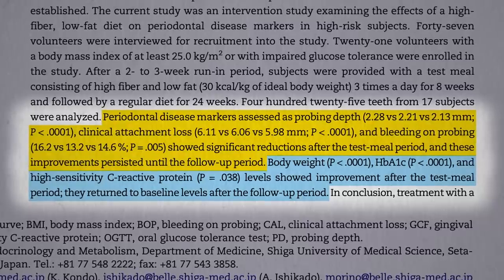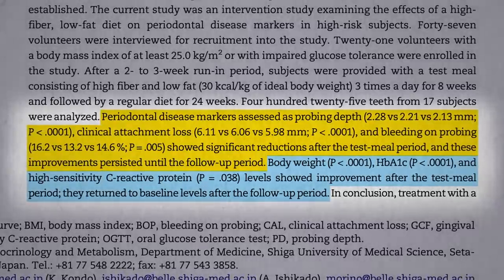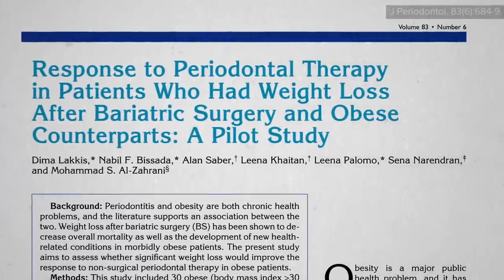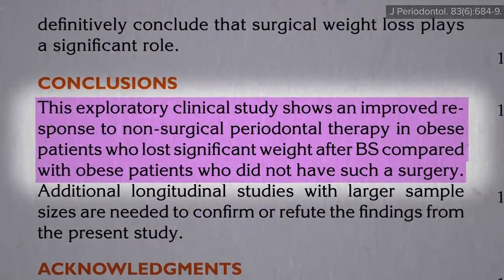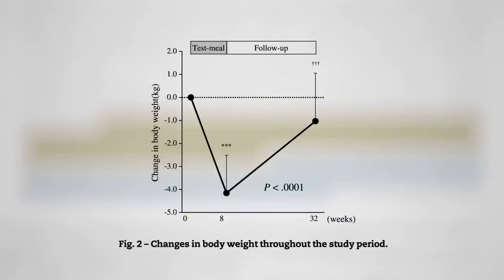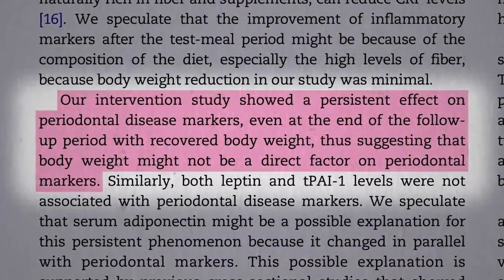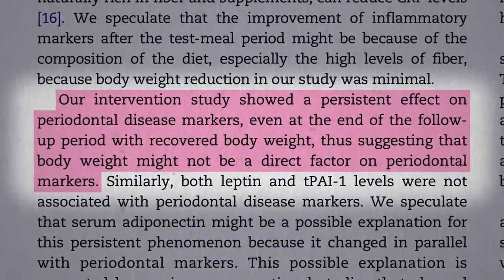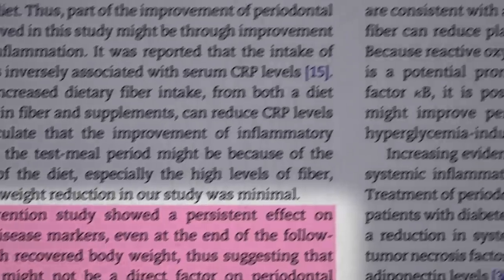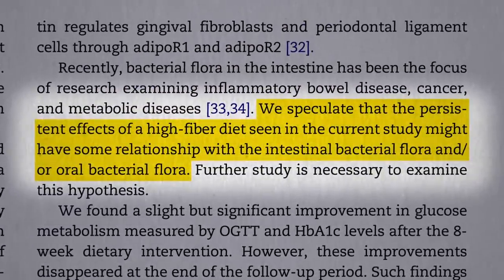But that complicates things. Maybe their mouths got better just because they lost so much weight — you can improve periodontal disease with just bariatric surgery, like stomach stapling. Well, after eight weeks on the diet, they went back on their regular diet and gained most of the weight back, but the periodontal disease improvements persisted, suggesting it was more than just weight loss. They're thinking maybe the high-fiber diet altered their good gut flora, or maybe their oral flora.